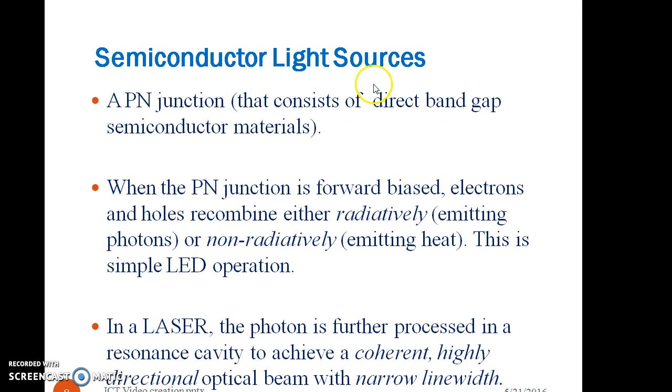The semiconductor light sources are like PN junction diode. These diodes are also called direct band gap semiconductor materials. When the PN junction diode is forward biased, it has recombination process. These recombinations are of two types: radiative recombinations and non-radiative recombinations.